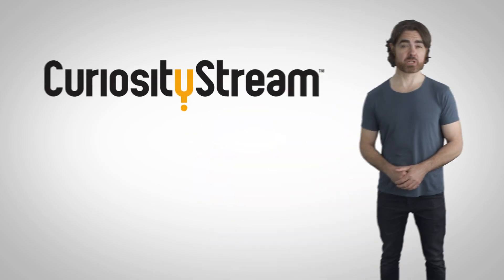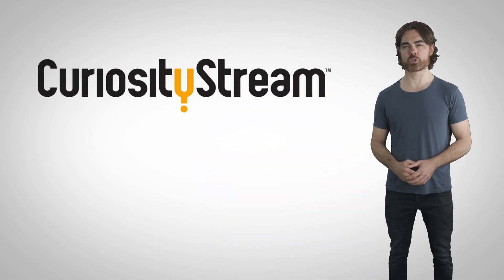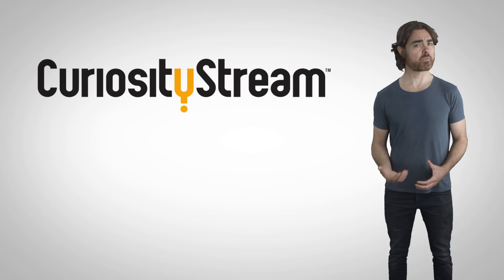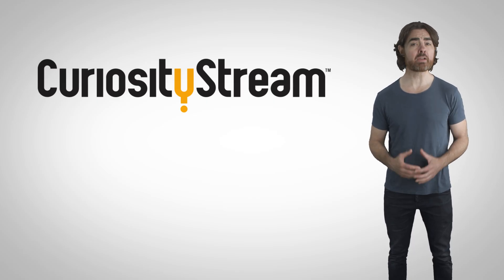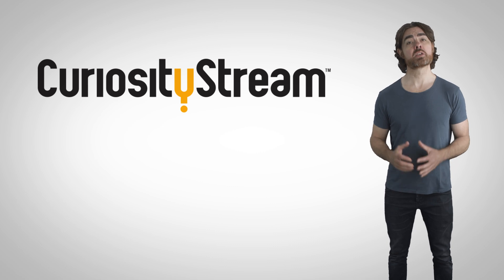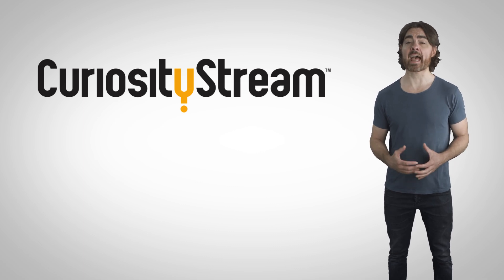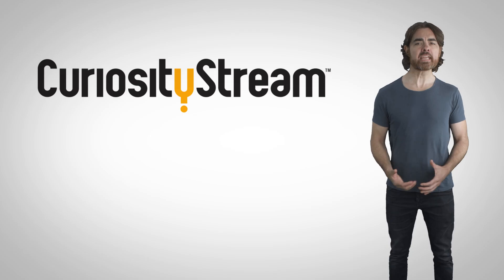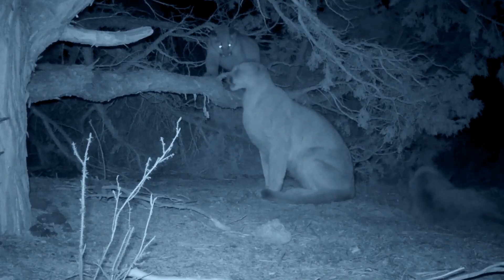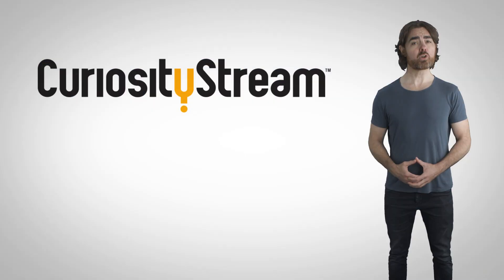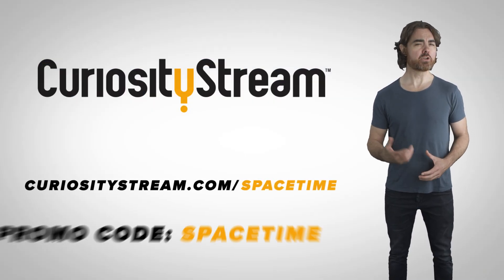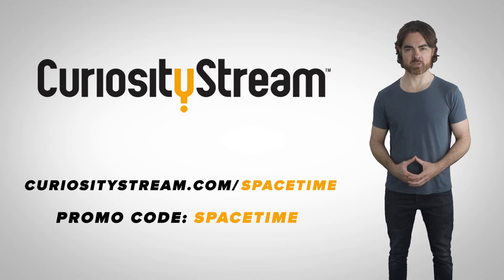Thank you to CuriosityStream for supporting PBS Digital Studios. CuriosityStream is a subscription streaming service that offers documentaries and non-fiction titles from a variety of filmmakers, including CuriosityStream originals, such as their upcoming three-part series Age of Big Cats, which looks at the unique evolution of big cats, their innovative hunting techniques, and how they spread across the globe. You can learn more at curiositystream.com slash spacetime, and use the code spacetime during the signup process.